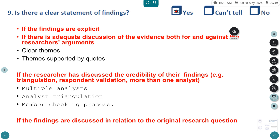Is there a clear statement of findings? The findings are explicit, with clear themes supported by direct quotes. For the credibility of findings, multiple analysts were used — three analysts, two not associated with the hospital and one being the investigator. Analyst triangulation involved more than one analyst reviewing the transcribed data. The member-checking process ensured the information was validated by participants. The findings are discussed in relation to the original research questions.